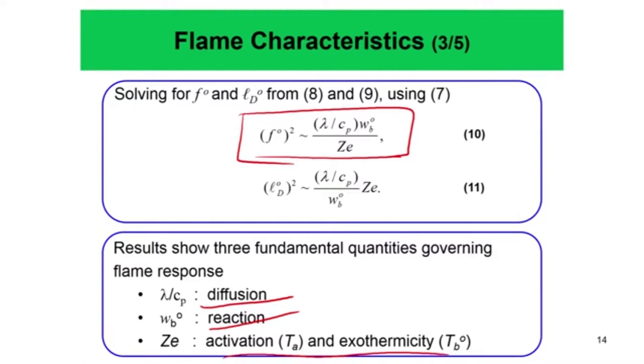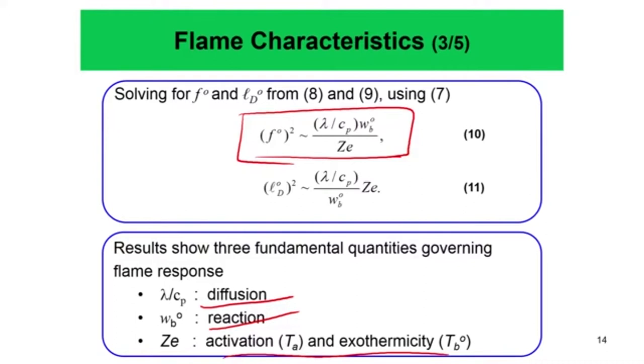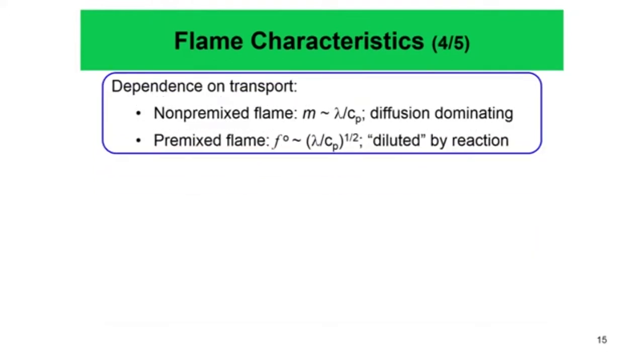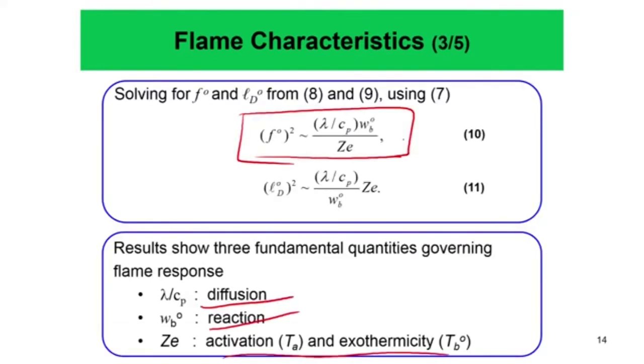This is a qualitative, order-of-magnitude scaling analysis. We then have to do a more detailed analysis to check how accurate is the conclusion that F_0² = (λ/C_p) · W_b0 / Zeldovich number.